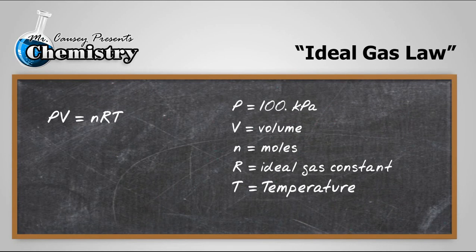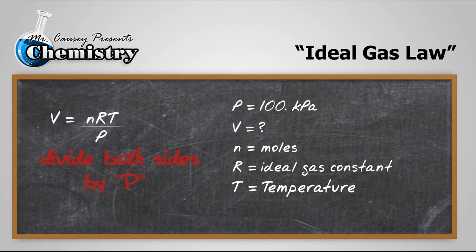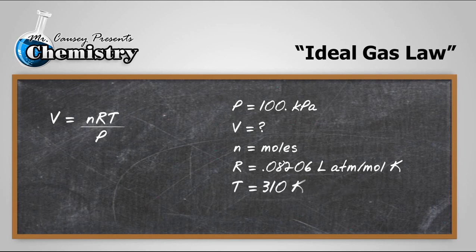Our pressure is 100 kilopascals, which we'll change into atmospheres. We're looking for the volume, so let's rearrange the equation with a little algebra. Then I need to know the moles. Let's put in the ideal gas constant and our temperature — that's 37 plus 273, which gives us the Kelvin. Always make sure you change it to Kelvin. The only thing I'm missing is moles, so I need to calculate that.